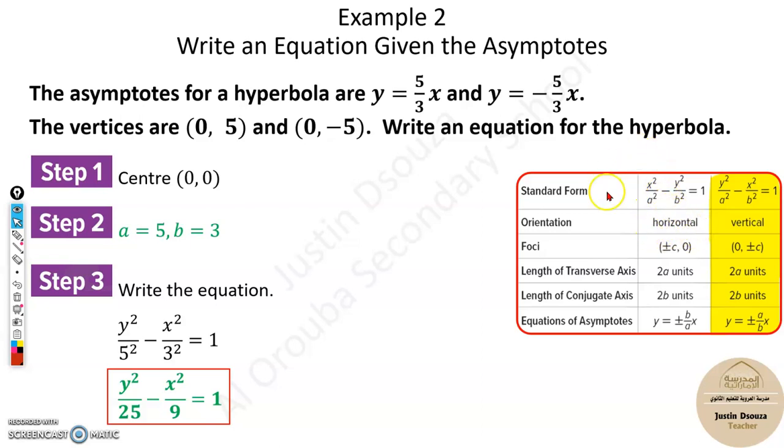When it is horizontal, this is the formula. When vertical, this is the formula. Anything can be asked, so be thorough with both of these. If it is horizontal, this is the figure—it's horizontally oriented. Vertical is like this. They will give you information in the question to easily understand whether it's vertical or horizontal.